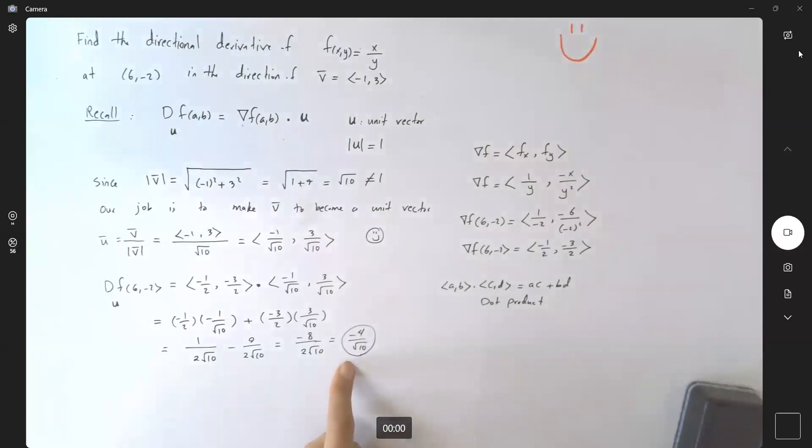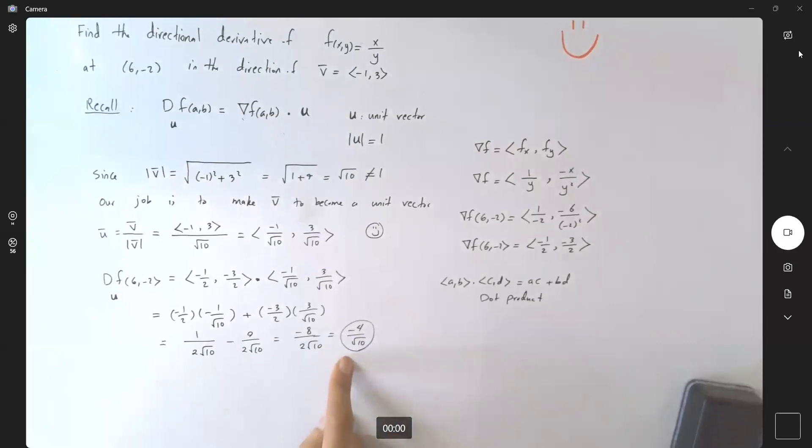If you would like to rationalize this fraction, you can just multiply that by √10 and simplify this more. So you get (-4 × √10)/10. So here you have -2√10/5 in rationalized form.